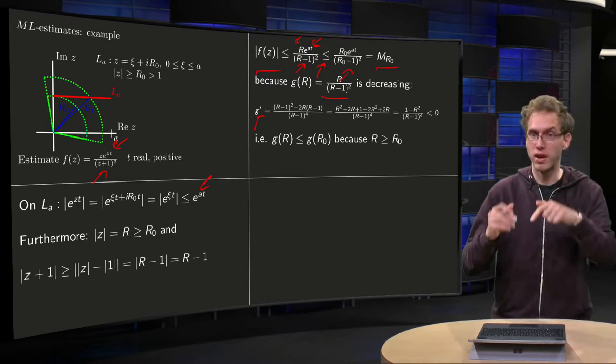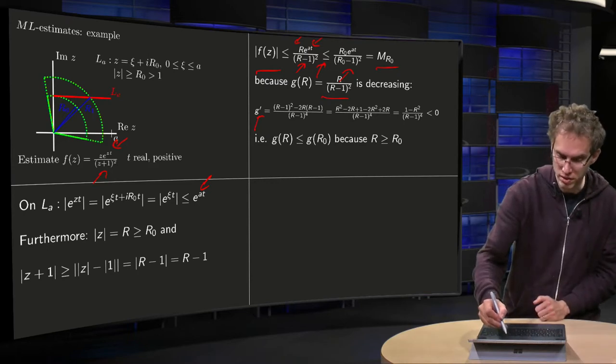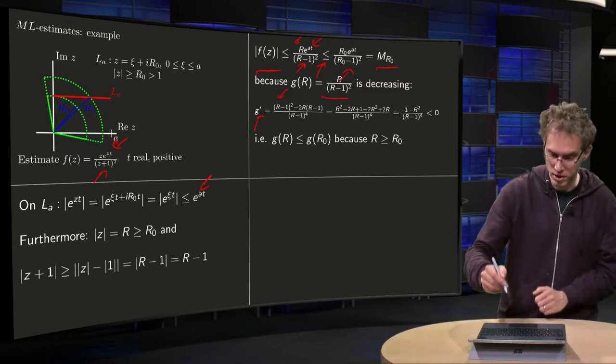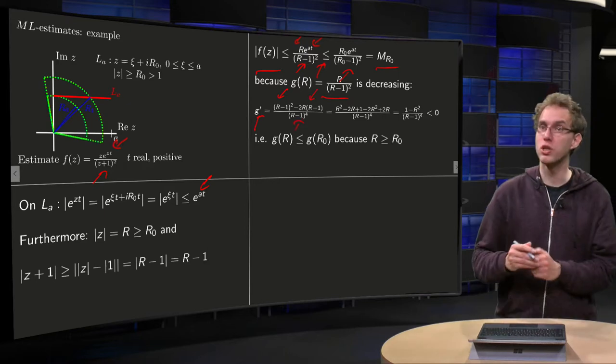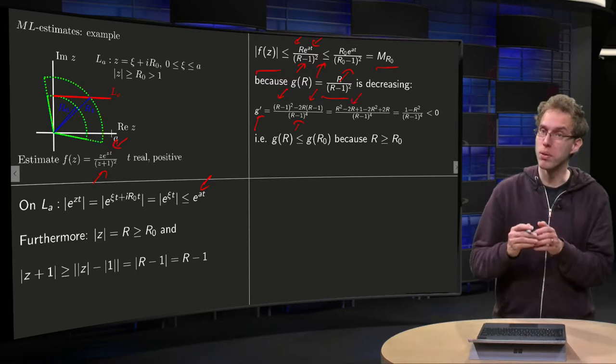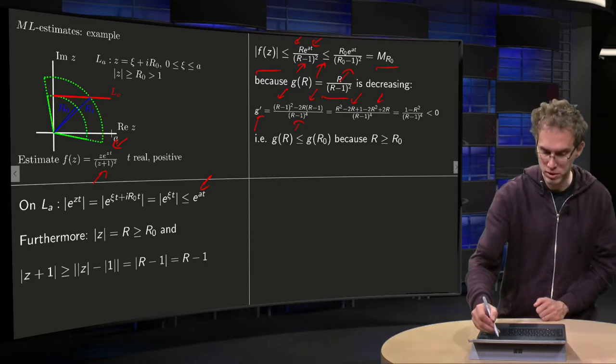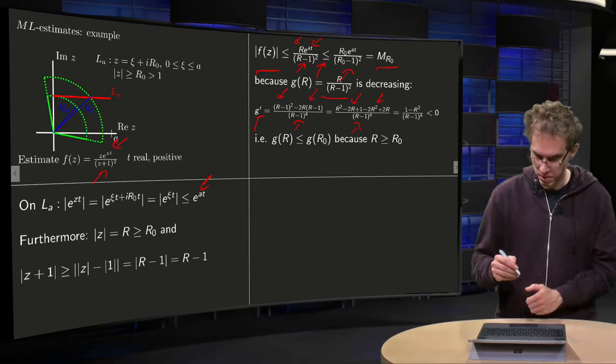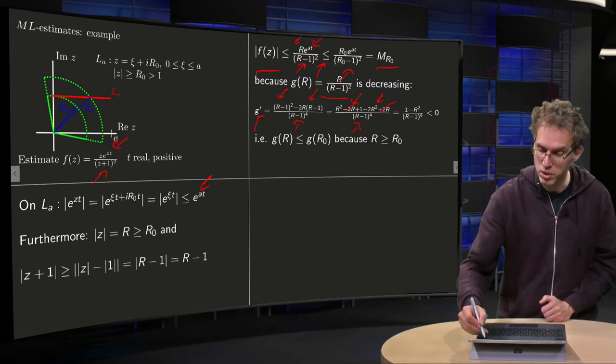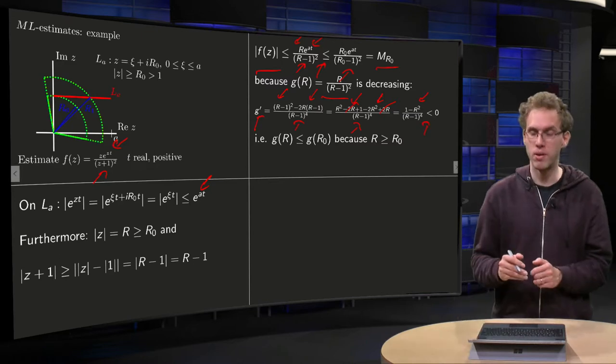So how do we compute G prime? Derivative of numerator times denominator, et cetera, using the quotient rule. The derivative of R equals 1 times (R-1) squared minus derivative of denominator, 2 times (R-1) times R, divided by denominator squared. Then you work out the brackets, you get R squared minus 2R plus 1 minus 2R squared plus 2R from the second term, divided by something positive. You see many terms cancel out, minus 2R plus 2R, so we're left with 1 minus R squared divided by something positive. R is bigger than 1, so this is smaller than 0.